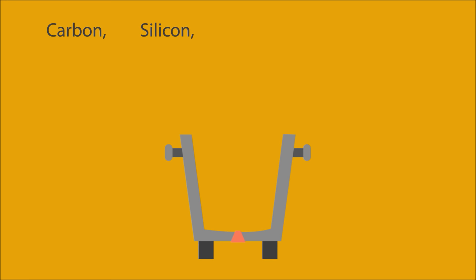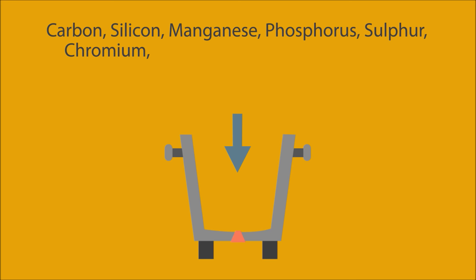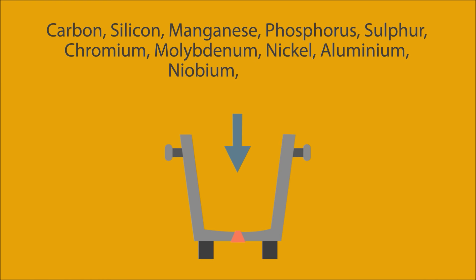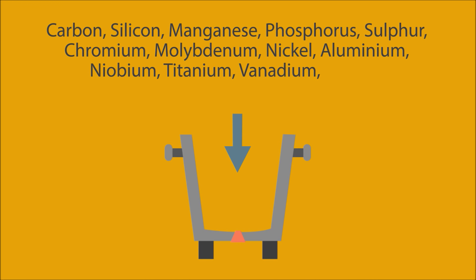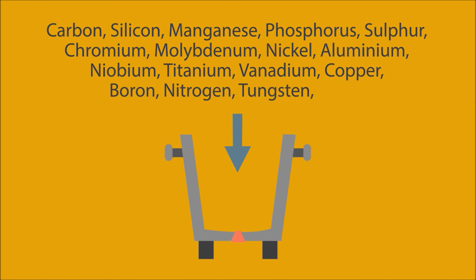To affect the steel in these ways, a wide variety of elements can be added. These include carbon, silicon, manganese, phosphorus, sulfur, chromium, molybdenum, nickel, aluminum, niobium (also called columbium), titanium, vanadium, copper, boron, nitrogen, tungsten, and cobalt.